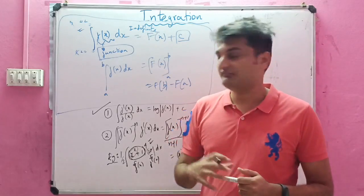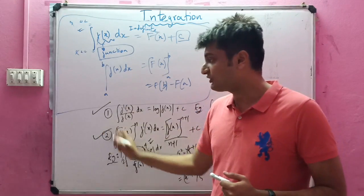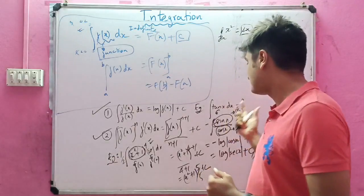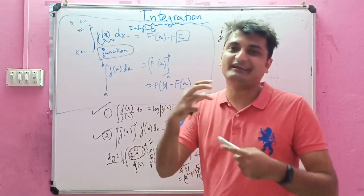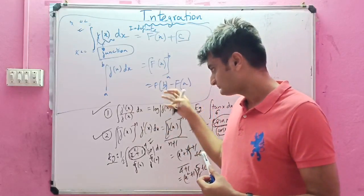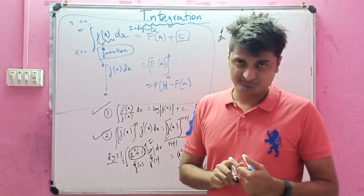This will be x square plus 1 whole power 5 by 5 plus c. In this way we have seen two important concepts wherein the function was given as algebraic in this case and trigonometric in this case, and how we transform the integral easily by using these rules.